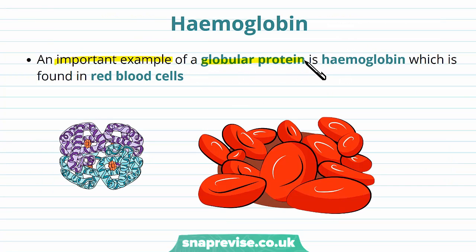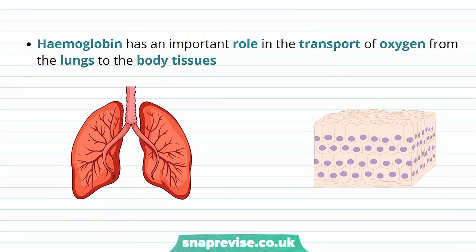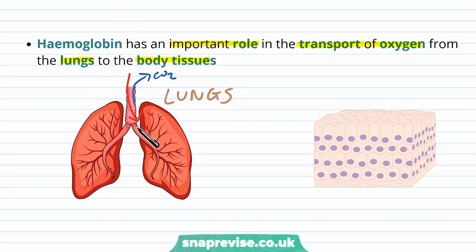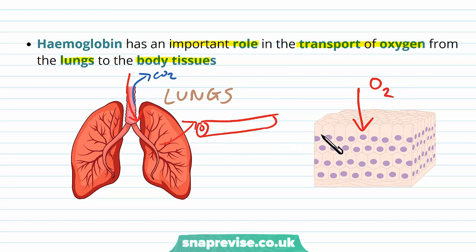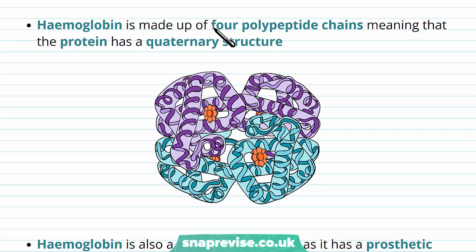An important example of a globular protein is haemoglobin, which is found in red blood cells. Haemoglobin, sometimes written as Hb, is packed into red blood cells, the most abundant cells found in the blood. Its role is very important: it transports oxygen from the lungs to the body tissues. Oxygen breathed into the airways needs to be delivered through the blood to the tissues, which use oxygen to carry out respiration. The structure of haemoglobin is made up of four polypeptide chains, meaning the protein has a quaternary structure.